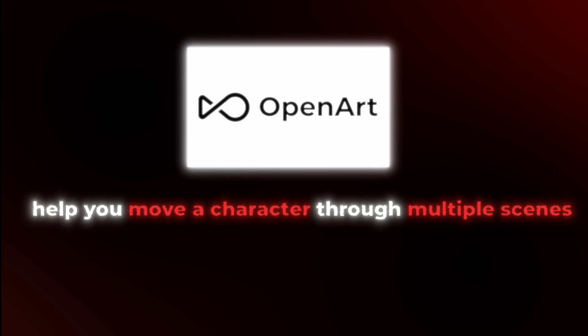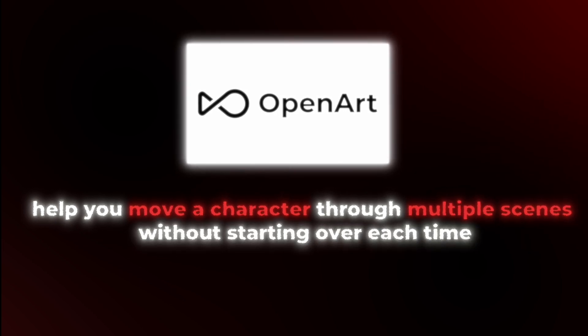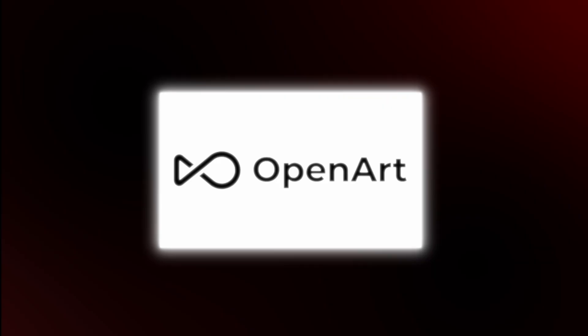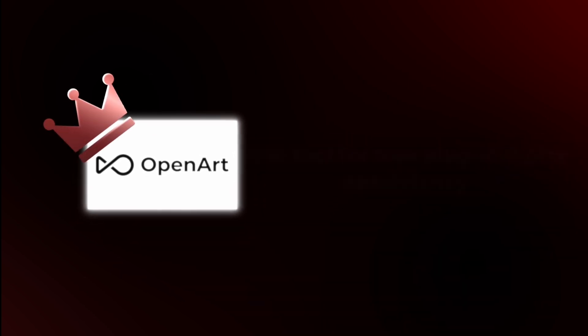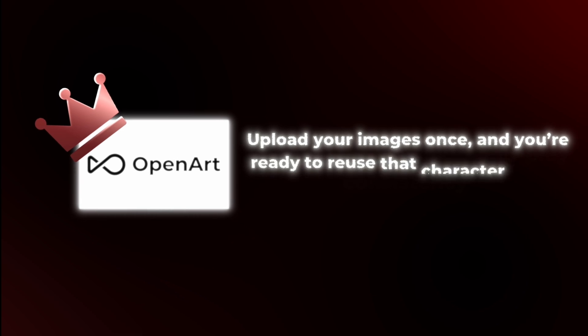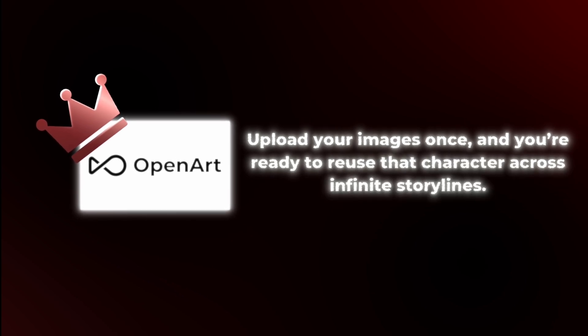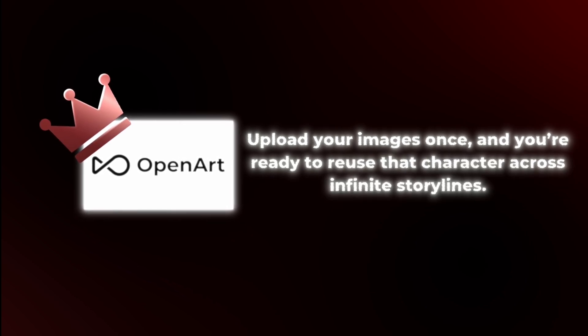If you want full creative control without messing with models or complex tools, OpenArt is the easiest way to create consistent characters across stories. It includes built-in editing, expression adjustments, pose control, background changes, and even wardrobe swaps all in one workflow. Whether you're building a comic, animation, or visual novel, this platform is built to help you move a character through multiple scenes without starting over each time. It's fast, user-friendly, and requires no technical setup. If I had to recommend just one tool for true plug-and-play consistency, OpenArt is it — upload your images once, and you're ready to reuse that character across infinite storylines. Want more tips like this? Hit follow, save this, and build smarter stories.